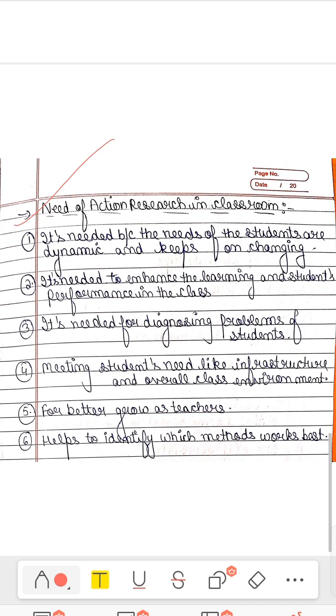Action research is necessary because the needs of the students are dynamic and keep on changing. Because the needs are changing for children, changes are needed. Teaching methods are needed in improvement. It is needed to enhance the learning and student performance. Diagnosing the problems for children's problems and meeting students needs like infrastructure and overall class environment. Better growth as a teacher. You will focus on your pedagogy and practice as a teacher will improve.